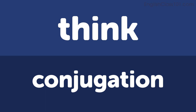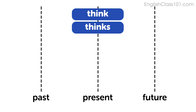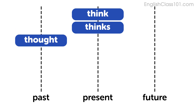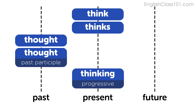Let's look at the conjugations of the verb think. Present tense: think, thinks. Past tense: thought. Past participle: thought. Progressive or continuous tense: thinking. Think, thinks, thought, thought, thinking.